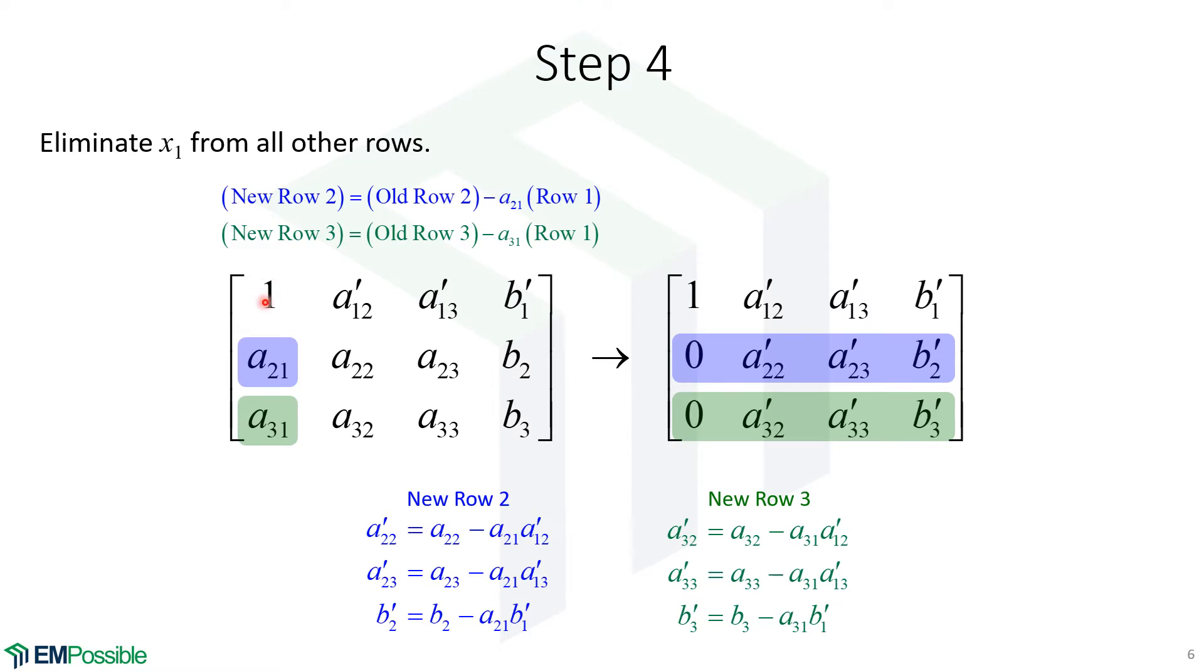Having a one in the diagonal position makes it easier so that we can eliminate X1 from rows 2 and 3. The way we can do that is we can calculate a new row 2 as the old row 2 minus A21 times row 1. When we subtract row 1 times the A21 from row 2, we get a 0 in the X1 position. Likewise, the new row 3 is the old row 3 minus row 1 times A31. So far, this is looking a lot like the naive Gauss elimination. And in fact it is, except here we're not going to go for a triangular matrix. We're going to go for an identity matrix with 1s going down the diagonal.